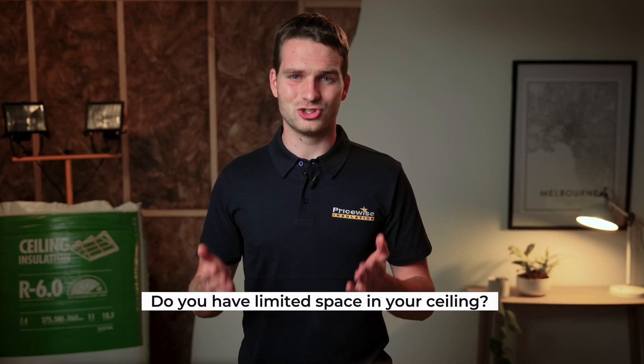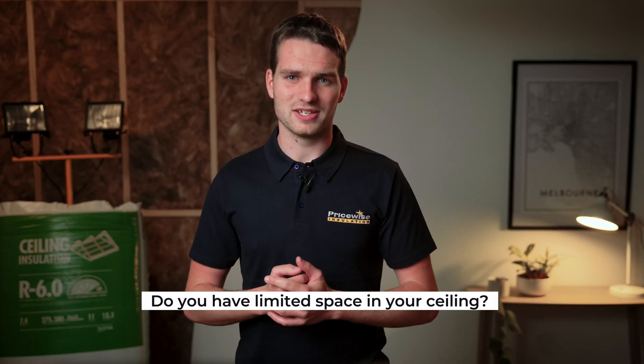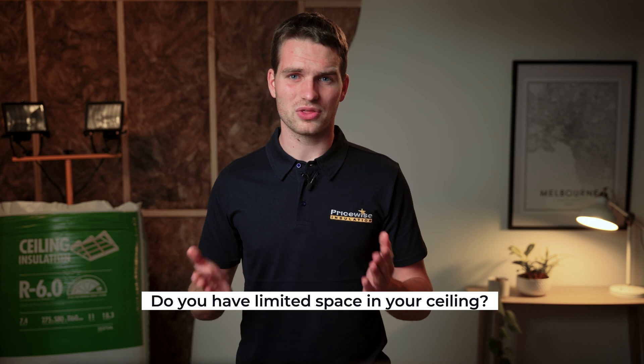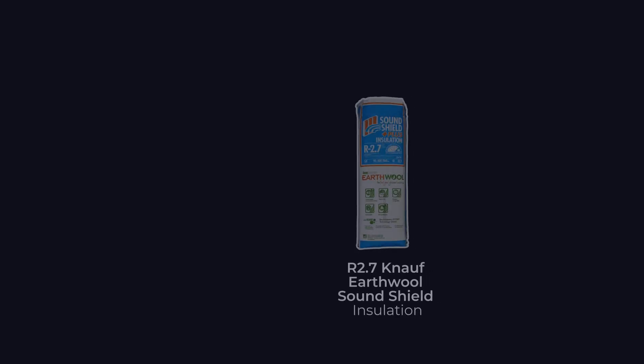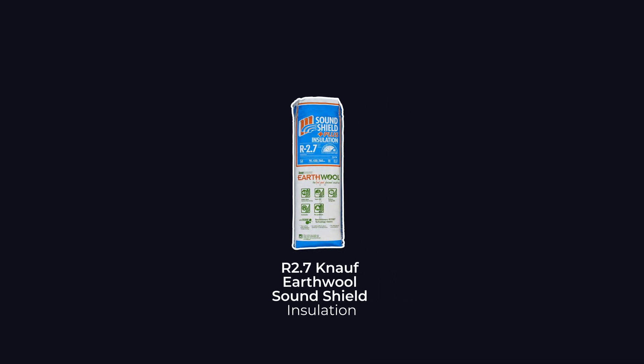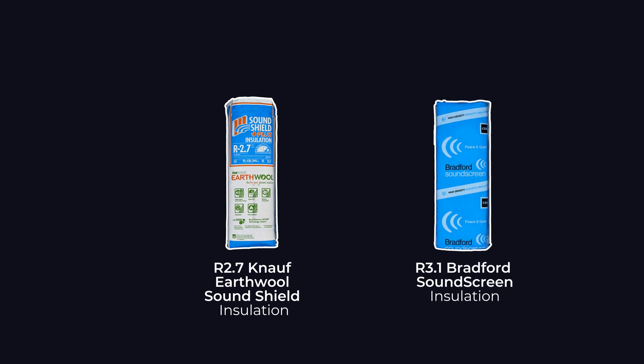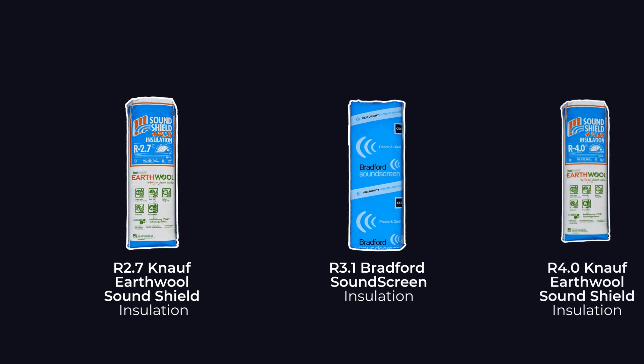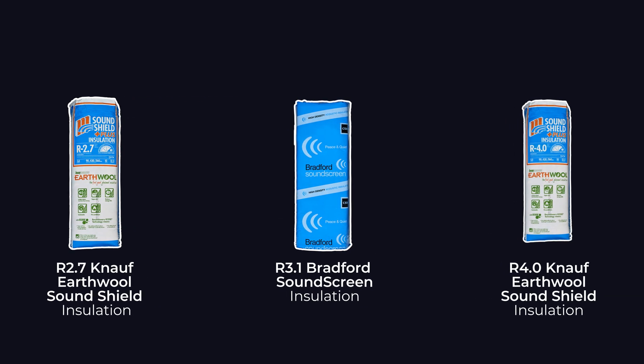And lastly, do you have limited space in your ceiling? Flat roofs and cathedral ceilings often have limited cavity depths. With these ceilings, we recommend installing a high-density wall insulation such as R2.7 HD, R3.1, or R4 HD acoustic bats. This will help you maximize your R-value in the limited space.